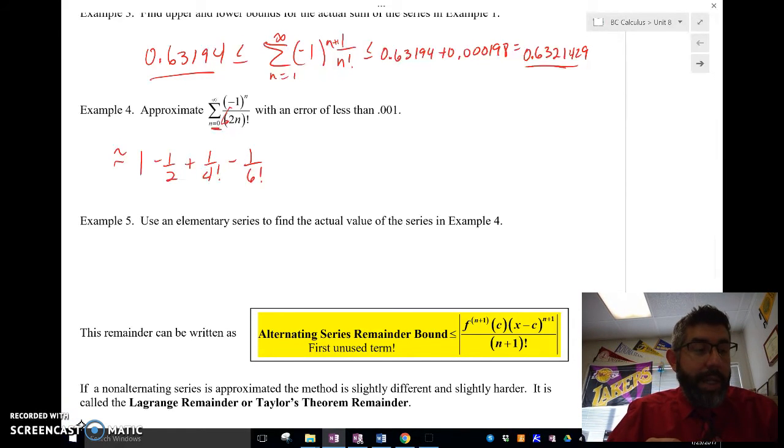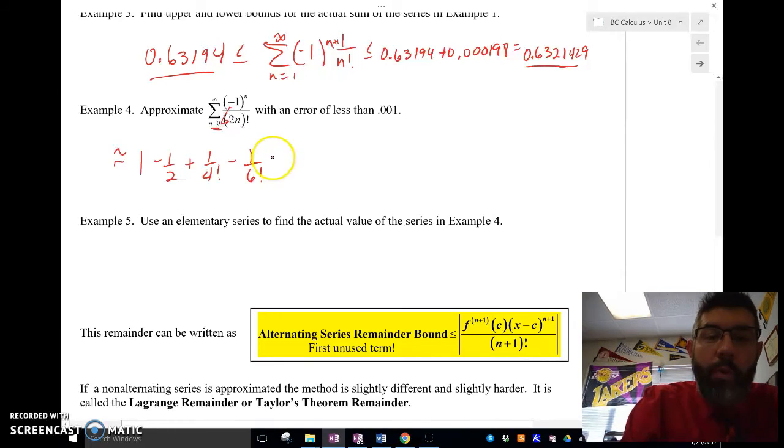Minus 1 over 6 factorial, which I calculated that out to be 0.00138. So that's still not less than 0.001. So I think I'm going to need to go one more.